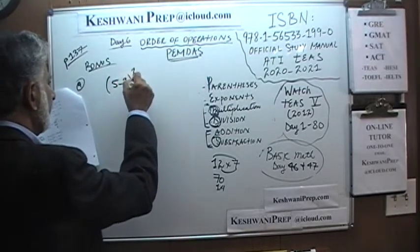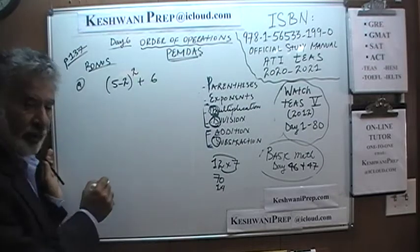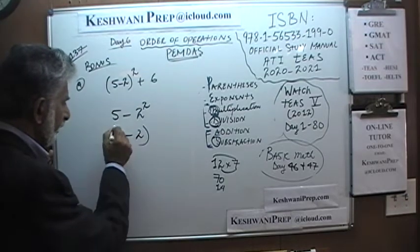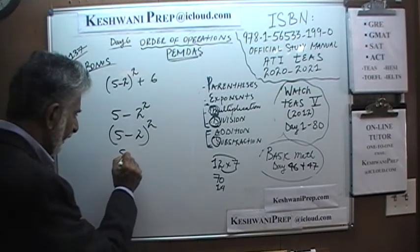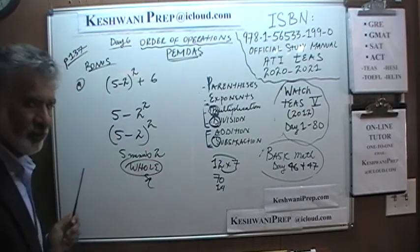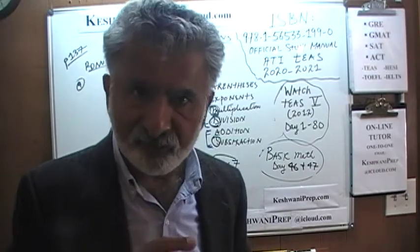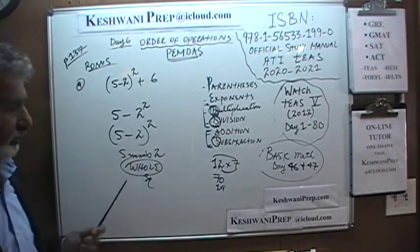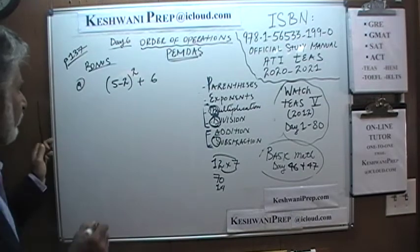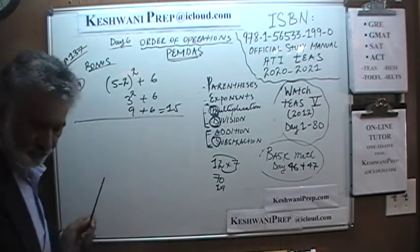Number 9: quantity 5 minus 2, whole squared, plus 6. Don't say 5 minus 2 squared — that's different. This is read as '5 minus 2, whole, squared,' meaning the entire quantity 5 minus 2 must be squared. So we do the parentheses first: 5 minus 2 is 3, so it is 3 squared plus 6. 3 squared is 9, and 9 plus 6 is 15. Very simple, very straightforward.